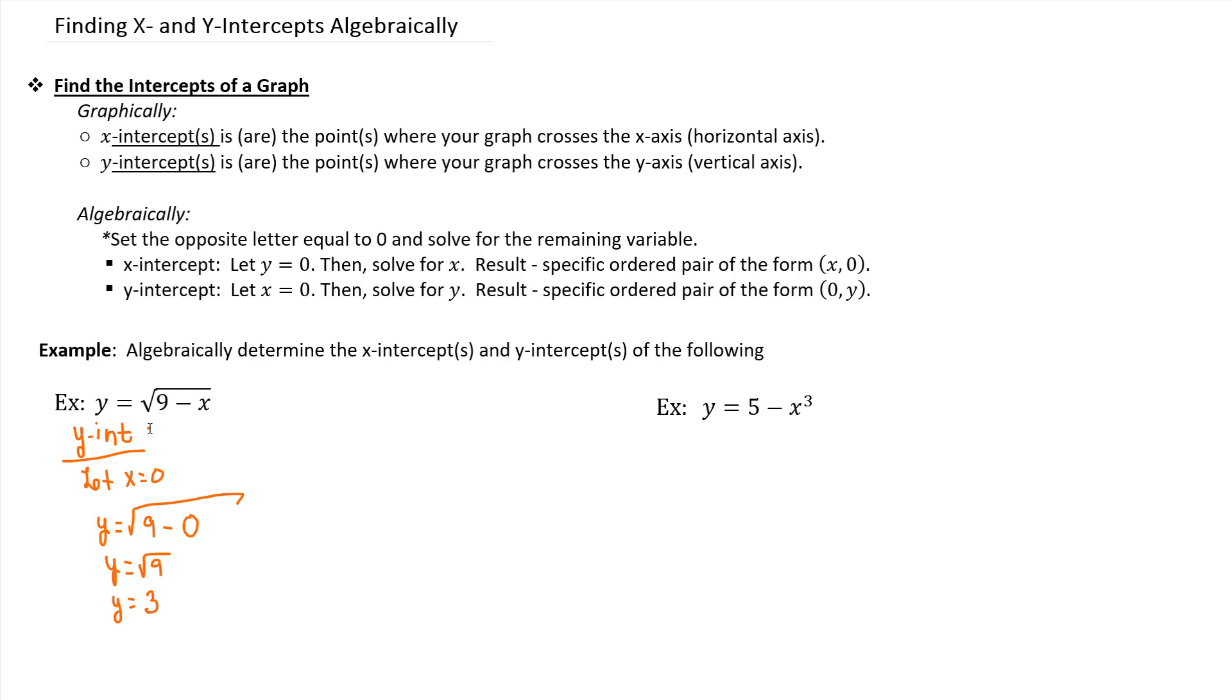That allows us to solve for the other coordinate that we didn't set equal to 0. We can solve for that coordinate. And so we end up with an ordered pair where x is 0 and y is 3, which is all stated here. And so that point on a physical graph is where this graph crosses the y-axis at 0, 3.